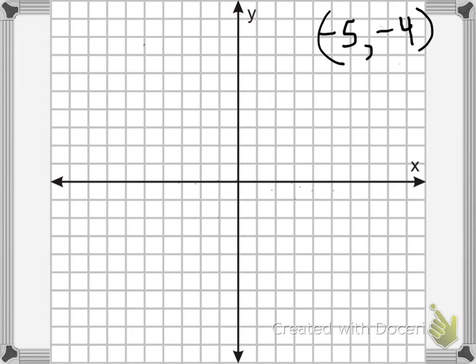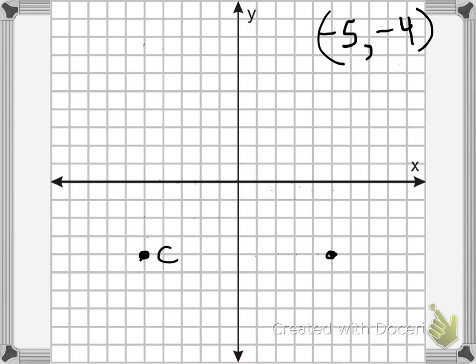Let's try one more reflected over the y axis. This time, negative 5, negative 4. So first we'll plot this — 1, 2, 3, 4, 5 over here in the negative. And then the y is negative also, so 1, 2, 3, 4. This will be my point — I'll call it point C. Now I'm going to reflect it over the y axis, like jumping over the y axis. My x value is going to be the opposite — so instead of negative 5, it will be positive 5 — 1, 2, 3, 4, 5 — right here. My y value stays the same: negative 4. And this would be point C1.